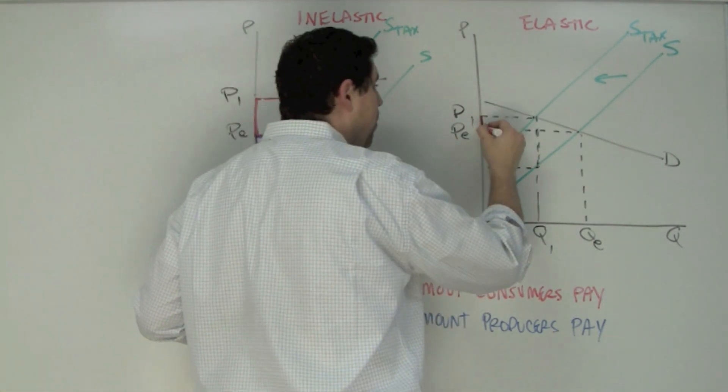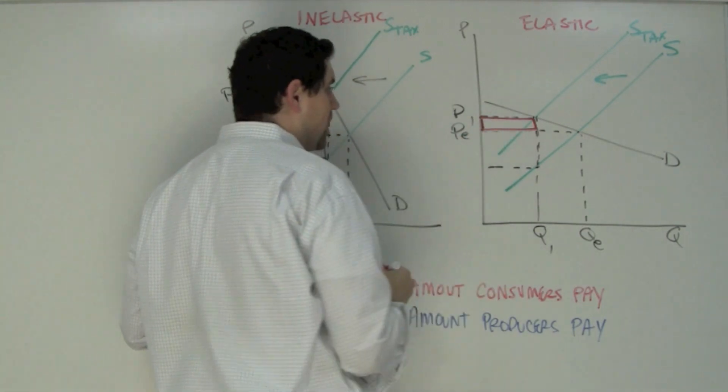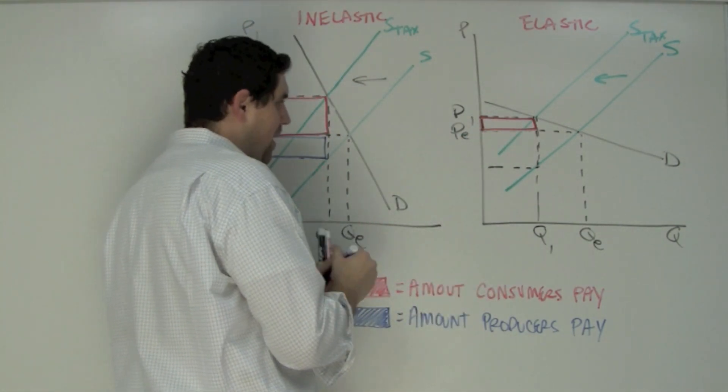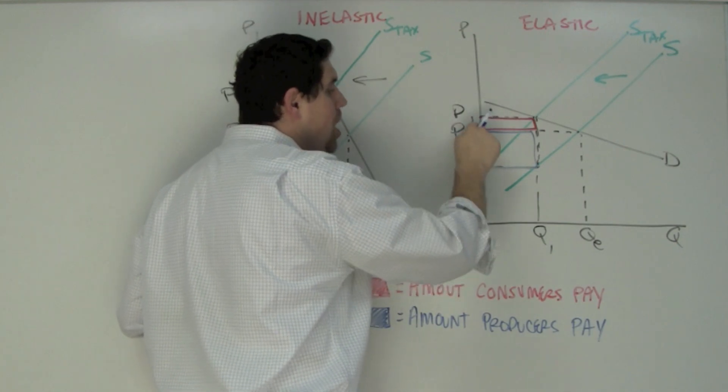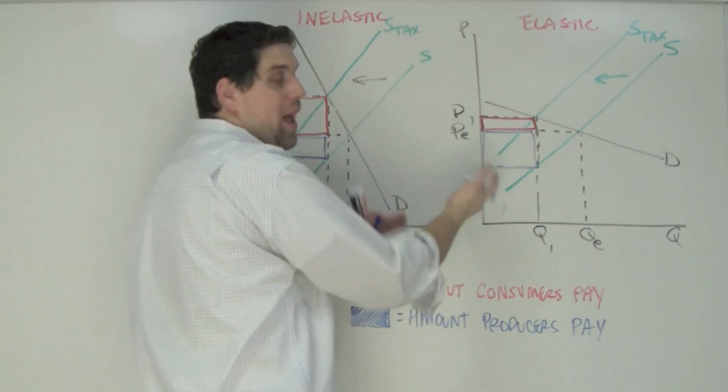Consumers pay this portion of the total tax revenue that goes to the government and producers have to pay this down here. Why? Because producers used to get PE but now they're only getting down here. So they're paying more of this tax.